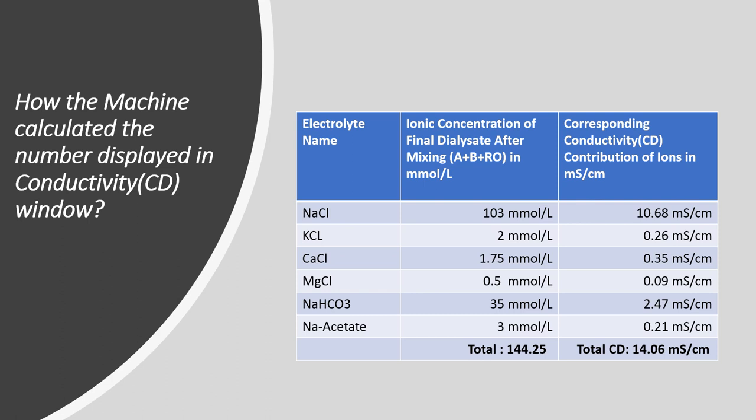Sodium chloride at 103 millimole per liter has a conductivity of 10.68 millisiemens per centimeter. KCl at 2 millimole per liter contributes 0.26 millisiemens per centimeter. Calcium chloride at 1.75 millimole per liter contributes 0.35, and magnesium chloride at 0.75 millimole per liter contributes 0.09 millisiemens per centimeter. Sodium bicarbonate at 35 millimole per liter contributes 2.47, and sodium acetate at 3 millimole per liter contributes 0.21 millisiemens per centimeter. The sum of all these gives a total displayed conductivity of 14.1 millisiemens per centimeter.